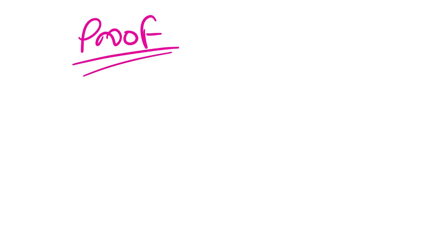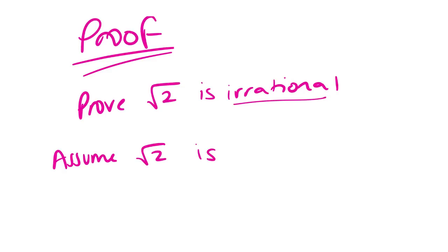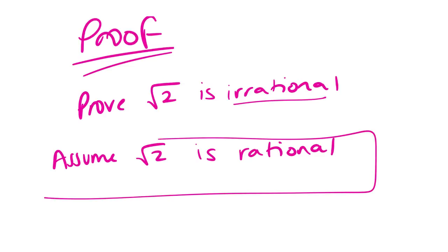Chapter one: proof. If you haven't learned it by now, don't learn it. All you need to learn is one thing to get a mark. We're doing proof by contradiction. To get that one mark, if it says 'prove by contradiction that root two is irrational,' you have to write an assumption. So you say 'assume root two is rational' — you do the opposite. If it says odd, assume even. You get one mark for writing that assumption statement, and then you go from there.